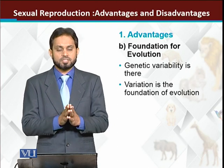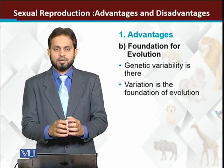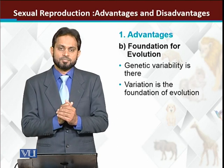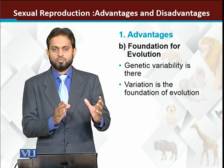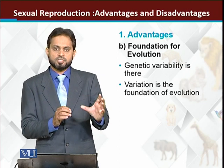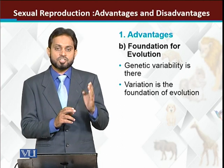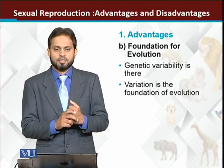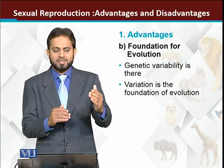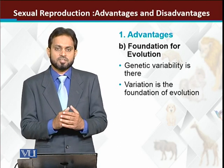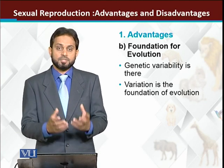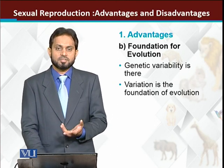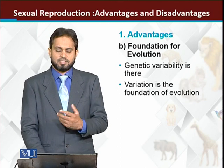Sexual reproduction provides the material used by evolution. If we talk about life, it is said that in 4 billion years of life, the first 2 billion years animals reproduced asexually. After 2 billion years, animals basically adopted sexual reproduction, which drove evolution, diversity, more genetic variability, more variations, and more evolutionary processes.